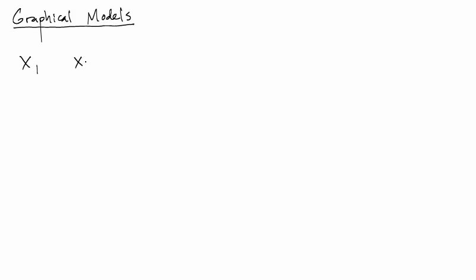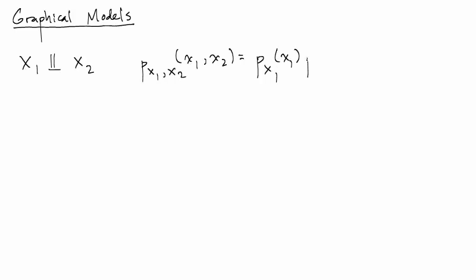Let's get started with a simple example where we have two random variables, x1 and x2, where we know that they're independent. This means that the joint probability distribution of x1 and x2, given by p of x1 and x2, evaluated at little x1, little x2, is going to be equal to the product of the marginals.